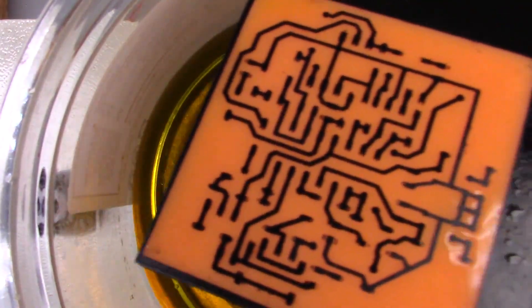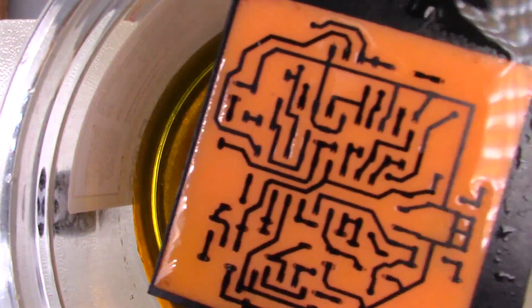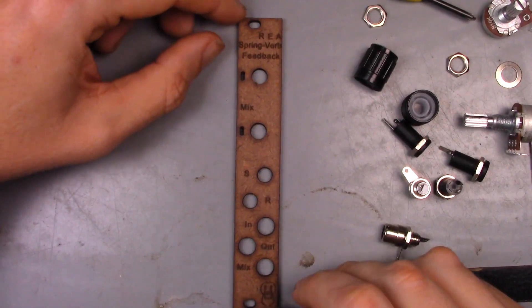Now while the PCB is in a ferric chloride bath removing the copper we don't want, the jacks and potentiometers can be mounted to the faceplate.